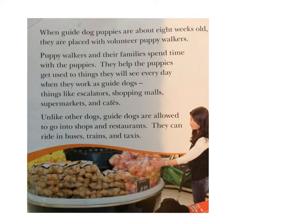Now let's read the next paragraph. Puppy walkers and their families spend time with the puppies. They help the puppies get used to things they will see every day when they work as guide dogs — things like escalators, shopping malls, supermarkets and cafes. So think about that paragraph. It's a group of sentences, a group of ideas that are the same, put together. It's all about training the puppies.